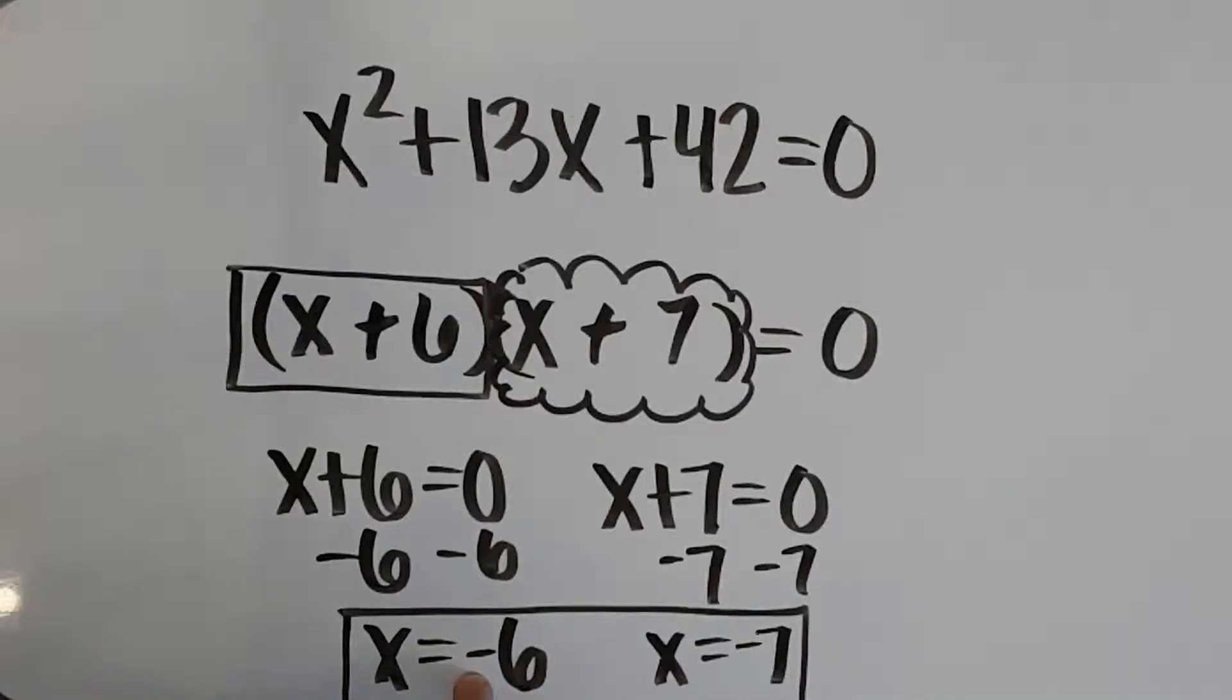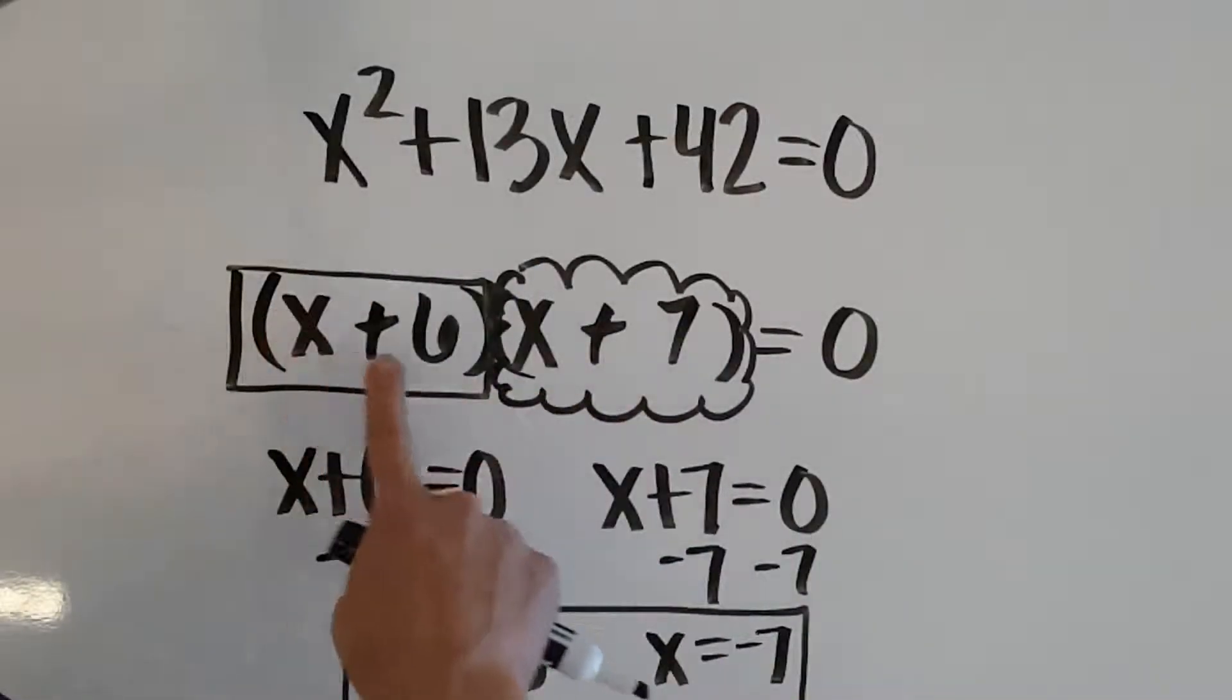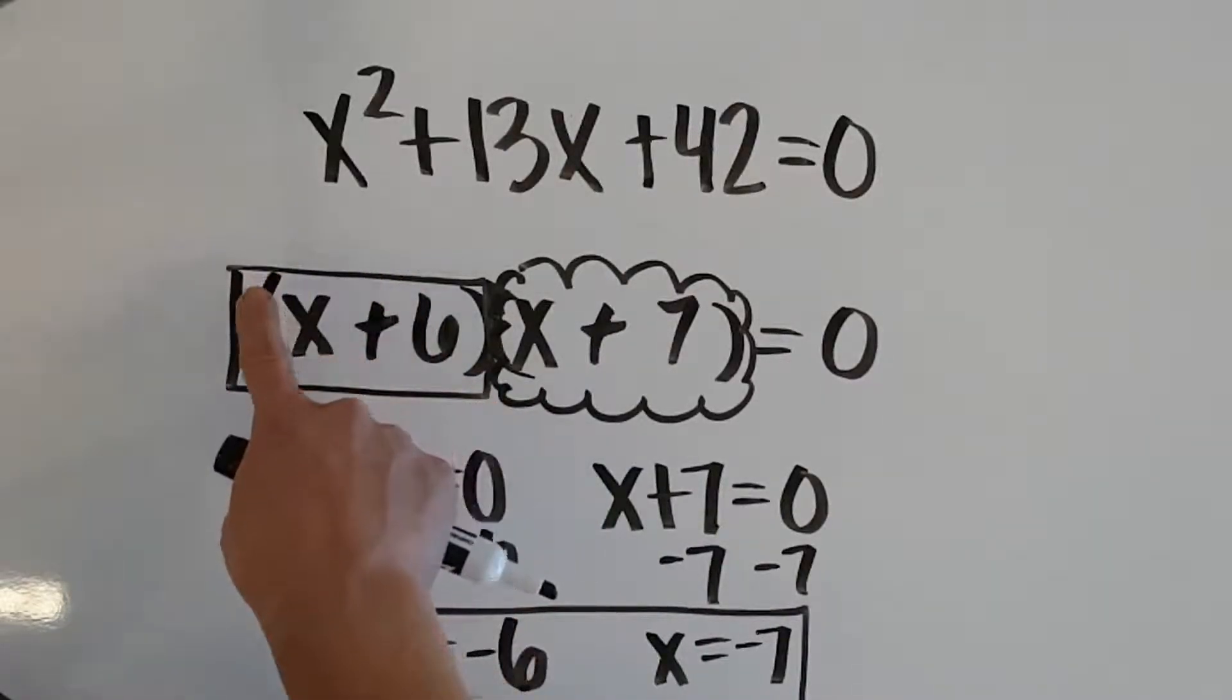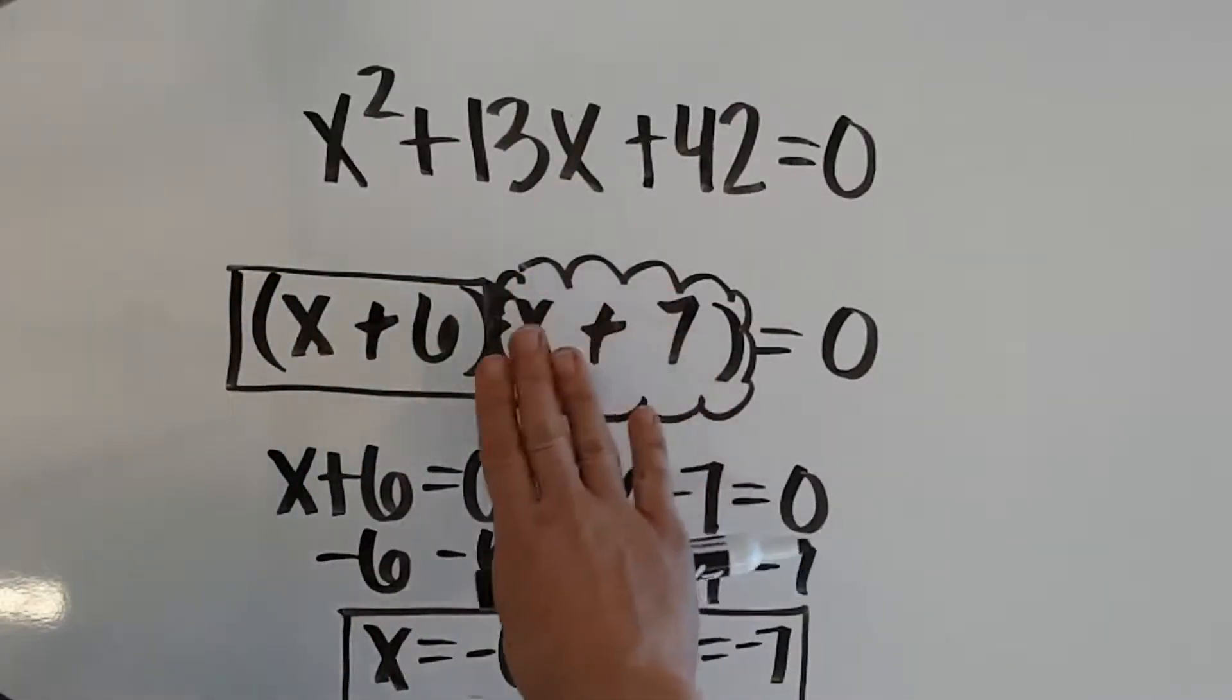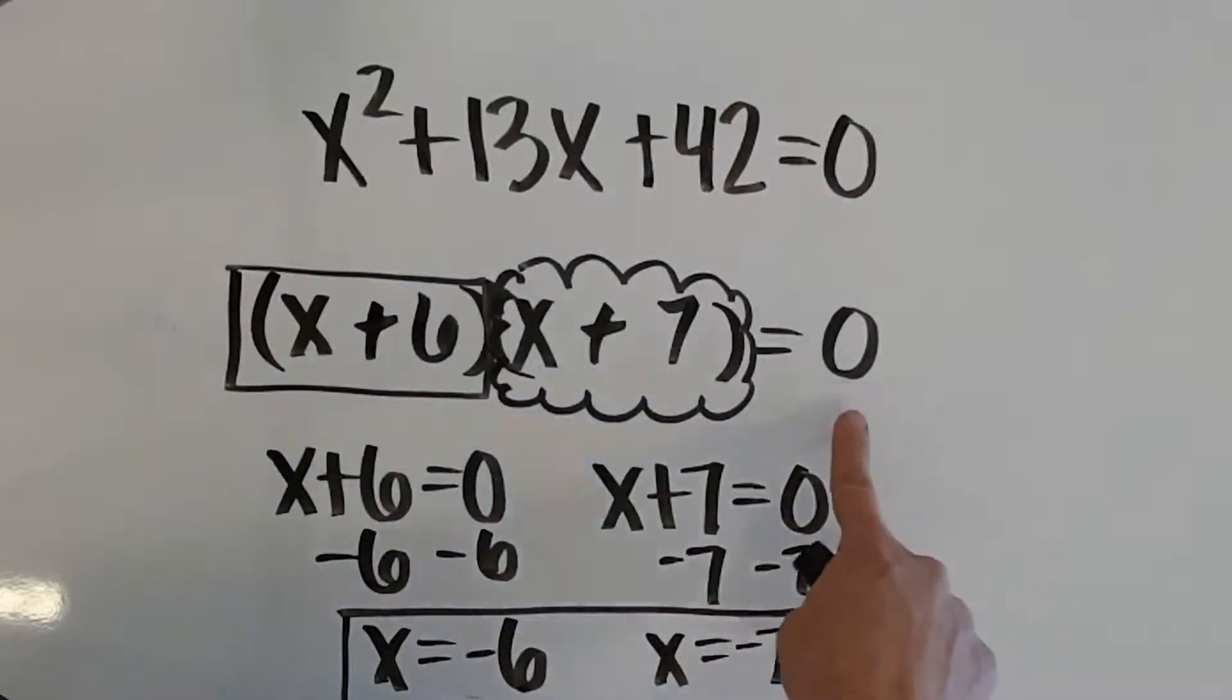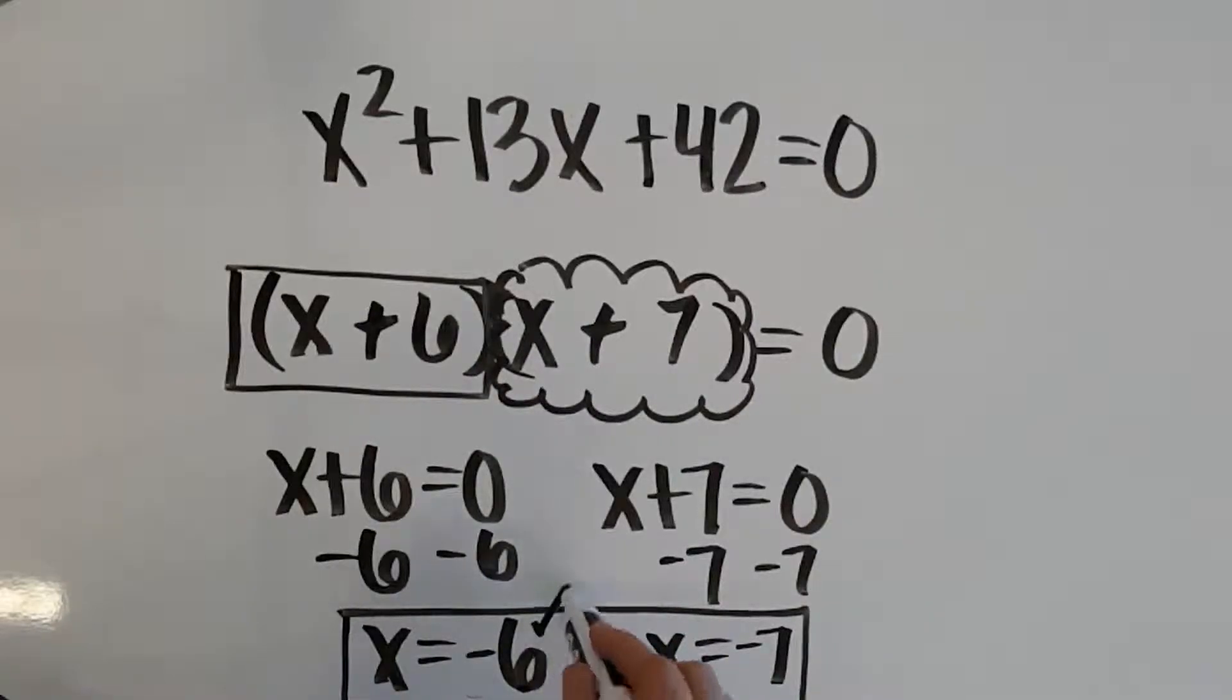If I take negative 6 and put it back into my equation right here, I would get negative 6 plus 6. Well, the box just ends up becoming 0. And then, it doesn't even matter what the bubble is. If I do 0 times my bubble, I'm going to get 0, which is what I want. So, that's how I know negative 6 works.